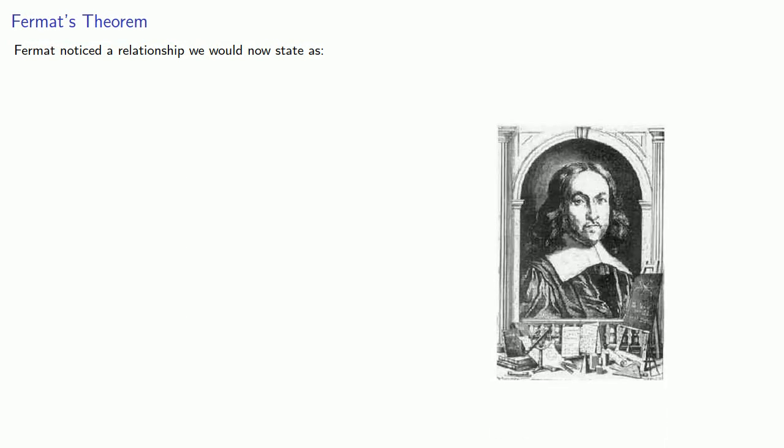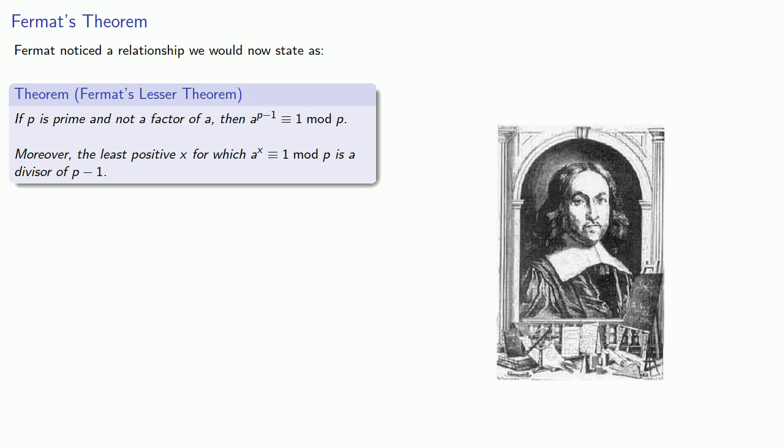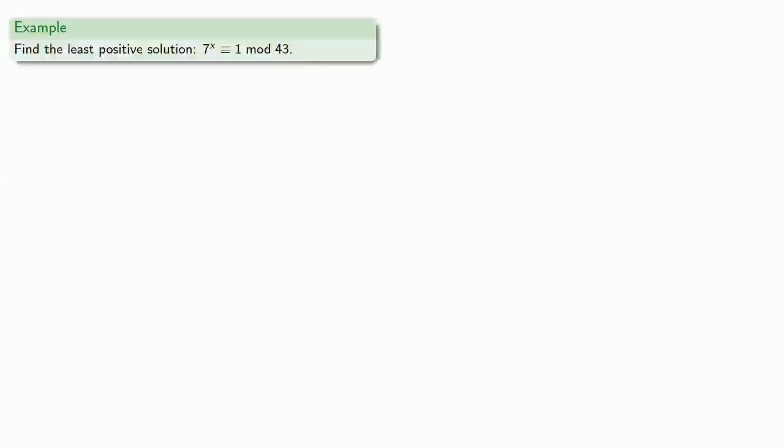In the 17th century, the French mathematician Pierre de Fermat noticed a relationship we would now state as follows: If p is prime and not a factor of a, then a to the power p minus 1 is congruent to 1 mod p. Moreover, the least positive x for which a to power x is congruent to 1 mod p is a divisor of p minus 1.